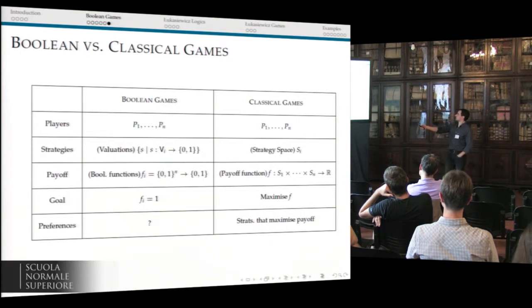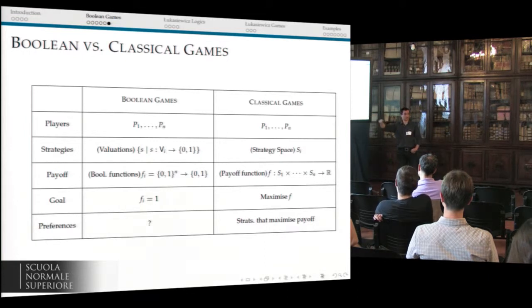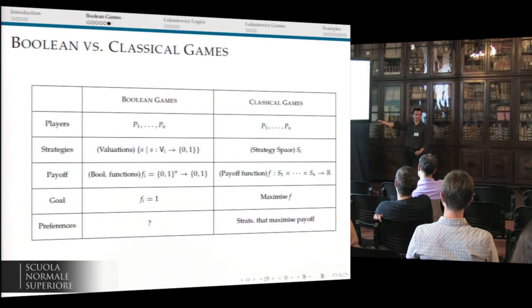Comparing these approaches: in a classical game, you have a finite set of players, a strategy space which might be finite or infinite, and payoff functions defined over strategy combinations that take a real value. In Boolean games, you simply have all the valuations of the propositional variables you control, and Boolean payoff functions. The goal is to maximize your payoff. You can talk about maximization here because what you want is one — the maximum — but maximizing here doesn't allow you to give a preference order on your choices, something that you can talk about in the classical setting.